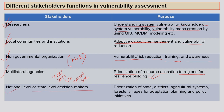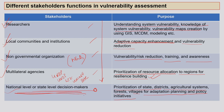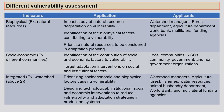National and state-level decision makers play a major role in implementing policy and technological changes. They help in prioritization of state, district, and agriculture systems, forests, and villages for adaptation planning and policy initiatives. If any part fails, the entire effort may not translate into meaningful action on the ground, which is why this stakeholder is critically important.